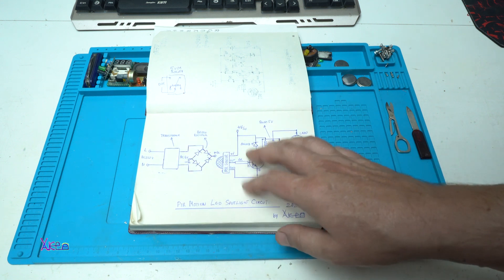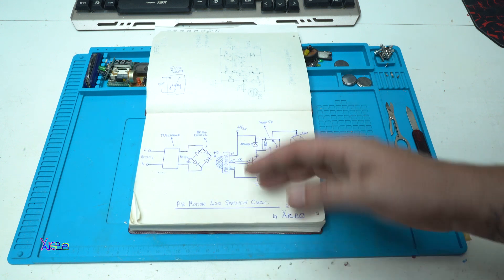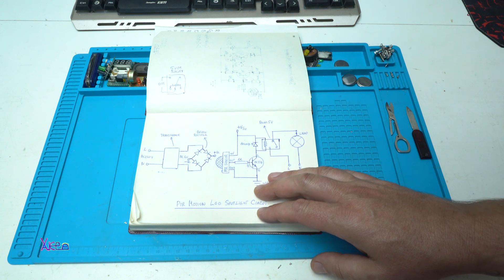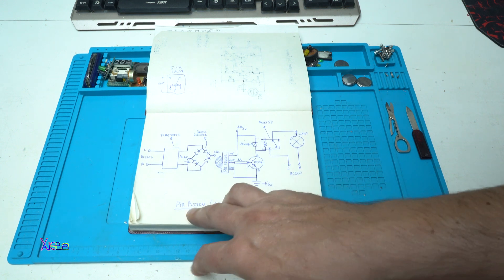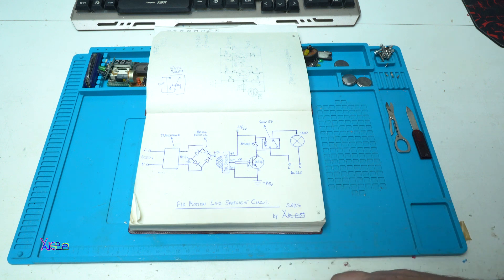I have already sketched the circuit and these are the parts that I am going to use for making this motion LED circuit. Let's start.